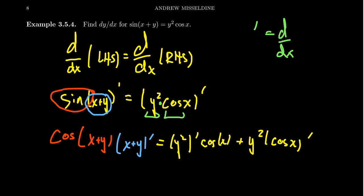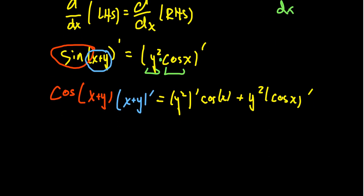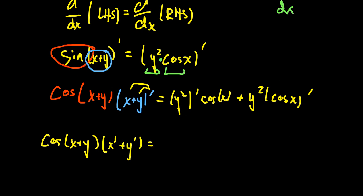Remember, in all of these calculations we're taking the derivative with respect to x. On the left-hand side, we have the factor cosine of x plus y — we don't need to do anything with it yet. But we still have the x plus y prime. By derivative rules, if you take the derivative of a sum, you can take the derivative of each summand separately. So we're going to get x prime plus y prime. On the right-hand side, we have some derivatives to calculate — what do you do with y squared prime? This is the key of implicit differentiation.